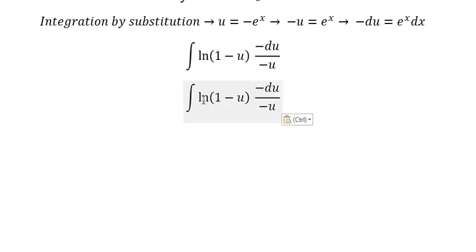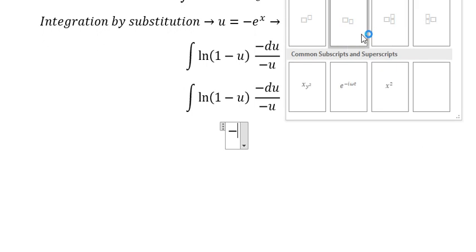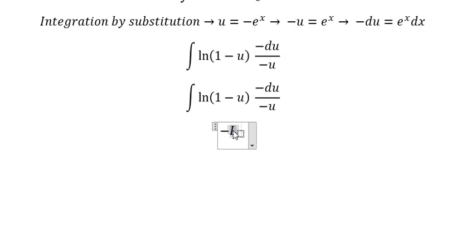The integral of ln(1 - u) over negative u. We can change this to negative Li₂(u) plus C.